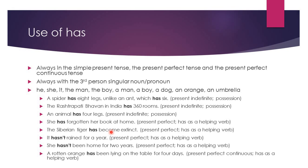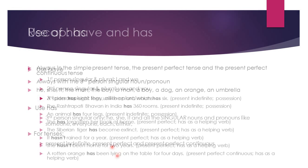'Become' is an irregular verb: base form 'become,' second form 'became,' and the third form (past participle) 'become.' 'It hasn't rained' — present perfect tense, 'has' is the auxiliary and 'rained' is the main verb. 'She hasn't been' — 'has' is the helping verb and 'been' is the main verb. 'Has been lying' — this is in the present perfect continuous tense, where 'has' and 'been' are both helping verbs and 'lying' is the main verb.